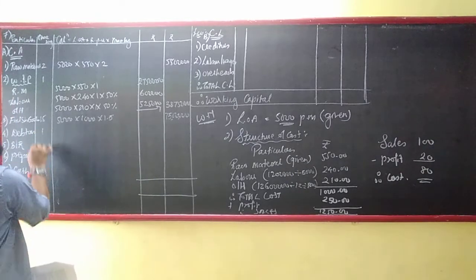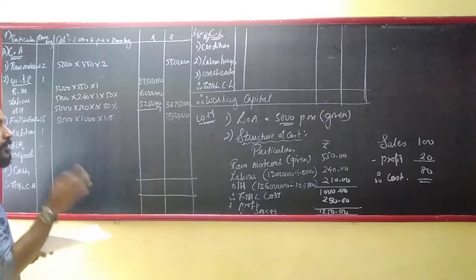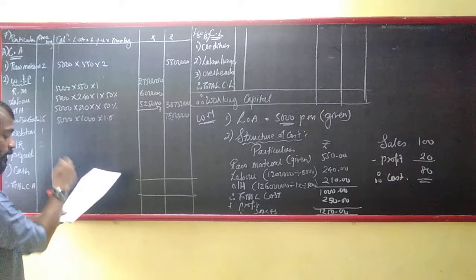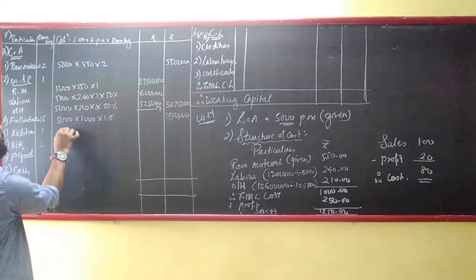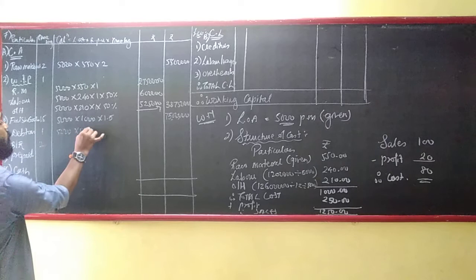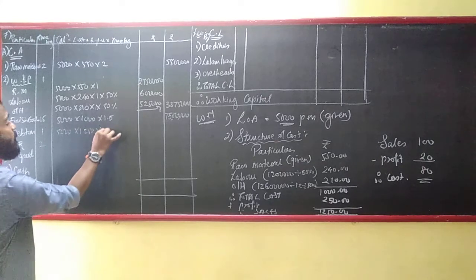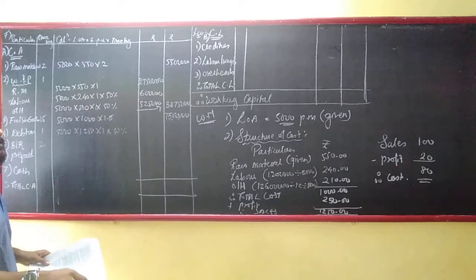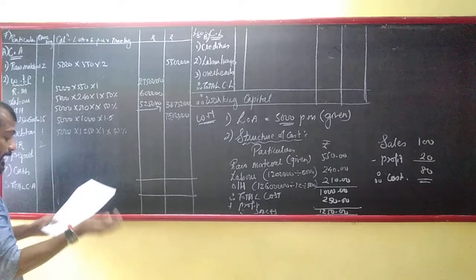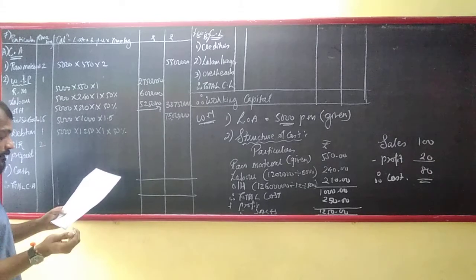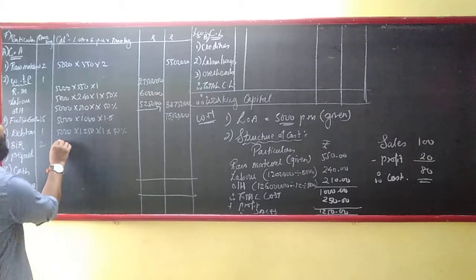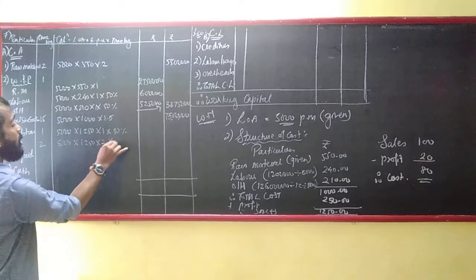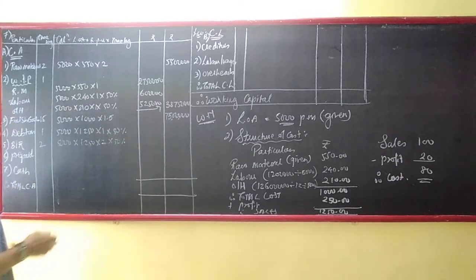For debtors: 1 month for 50% and 2 months for the other 50%. So: 5,000 × ₹1,250 × 1 × 50% for the first portion. Please be careful while writing zeros — some people are making errors there.